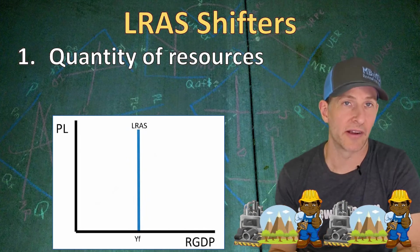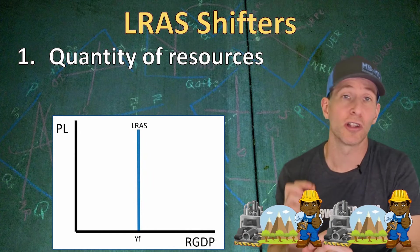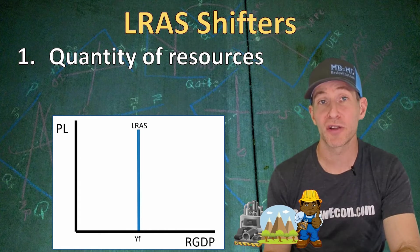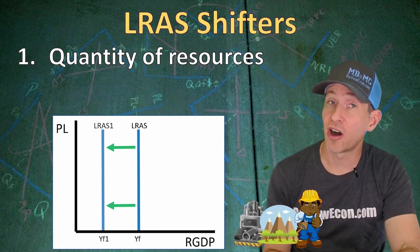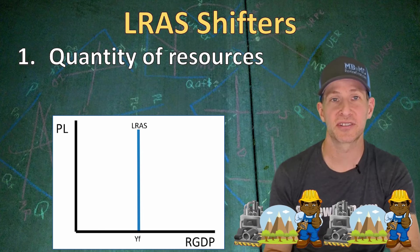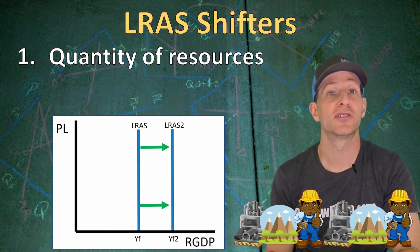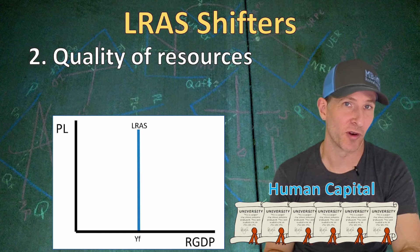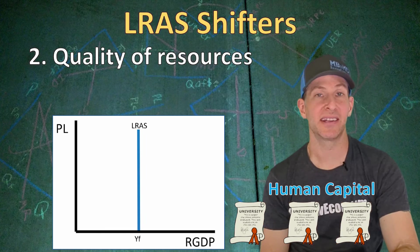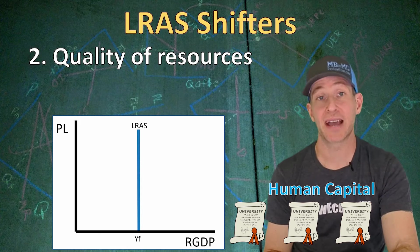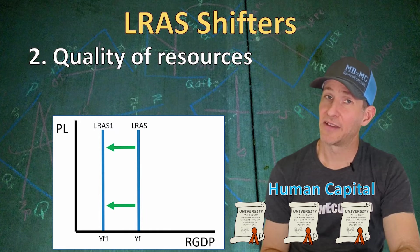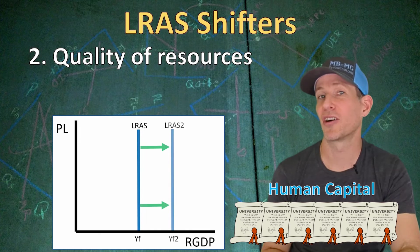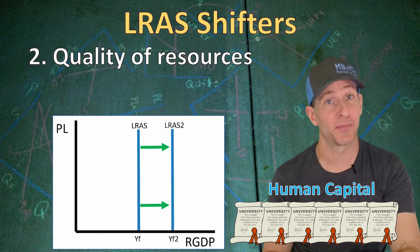Next we're going to talk about the long run aggregate supply curve shifters. The long run aggregate supply curve is the long run potential real GDP output for an economy. If we have a decrease in the quantity of resources, it will no longer be possible to produce as much output, shifting our long run aggregate supply curve to the left. If we see an increase in the quantity of resources, that's going to shift our long run aggregate supply curve to the right. Our second shifter is the quality of resources — human capital, the skills and knowledge of the workforce. Fewer educated workers shifts it left; increases in job training programs shift it to the right.